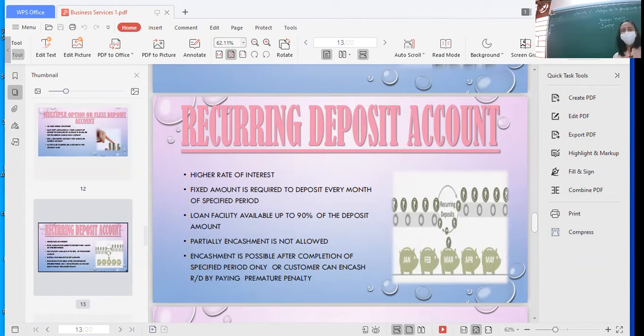Maturity se pehle agar aap withdraw karna chahte ho to aap ko ek loan facility kind of bhi milti hai. So for students or for small savers, this is the best instrument. Agar aapko savings ke liye ek account kholna hai aur aap thode se extravagant ho, for such kind of people recurring deposit account is the best instrument. Ek to small amount aapko karni hai, har mahine aapke upar pressure hoga, plus aapne fixed period ke liye karai hai to usse pehle aap withdraw bhi nahi kar sakte hain. Iske sath koi aapko check facility nahi milti. Check facility sirf do account mein milti hai - saving mein aur current account mein.